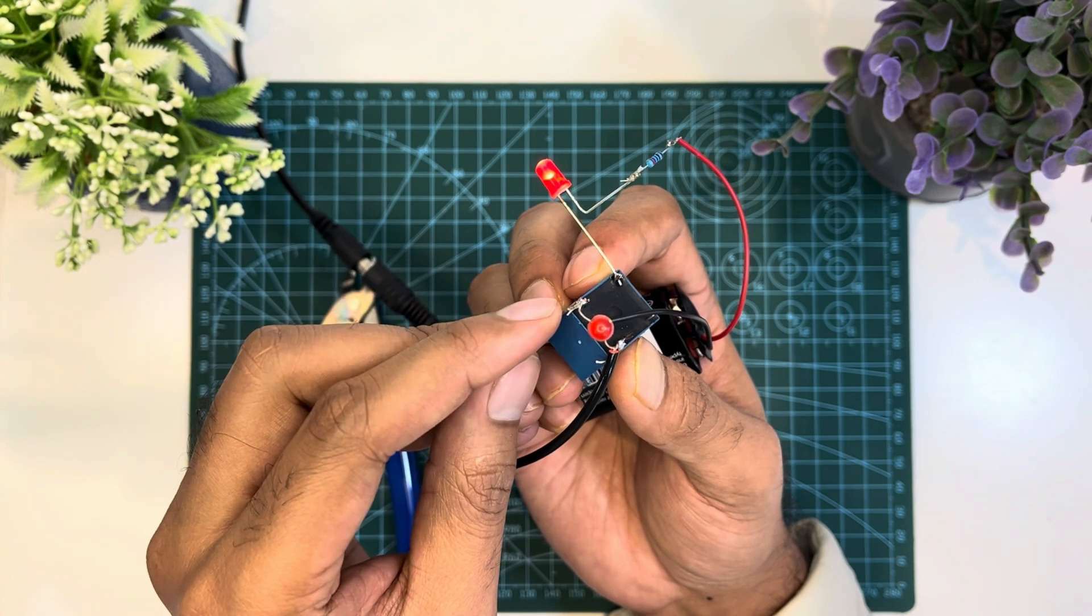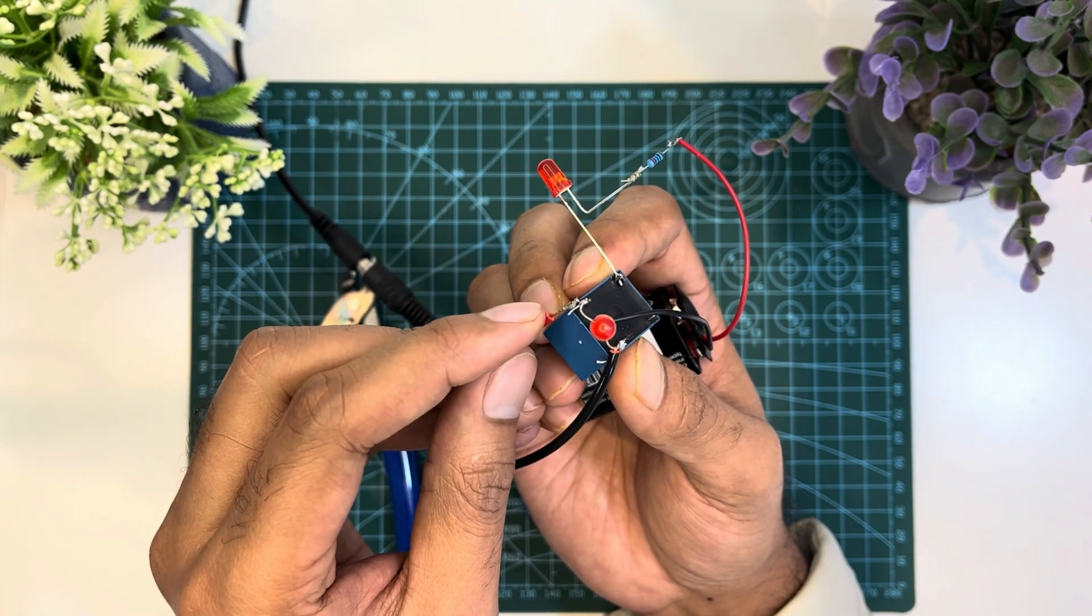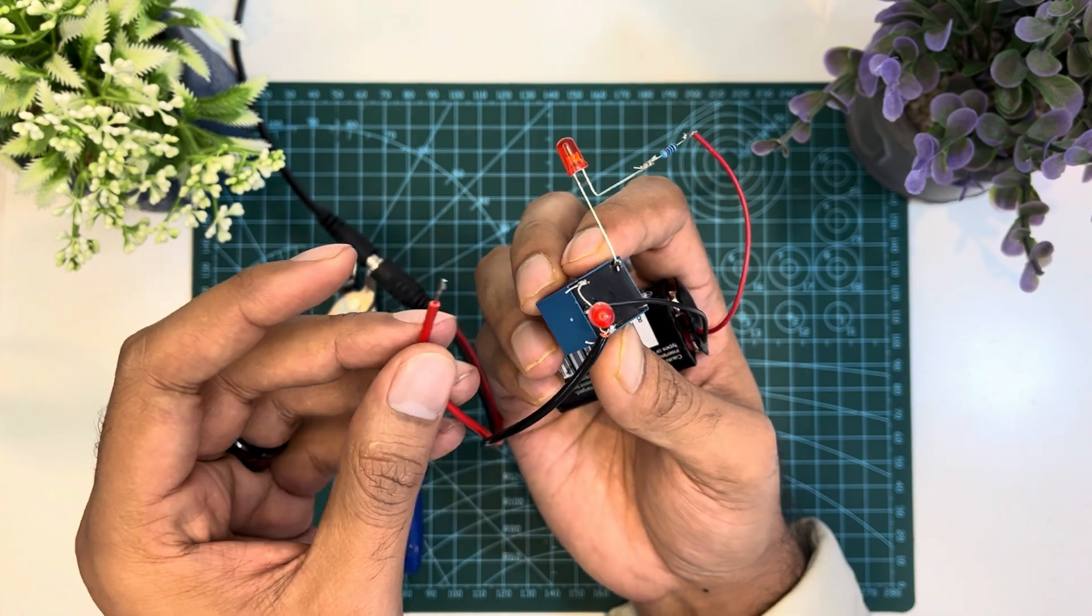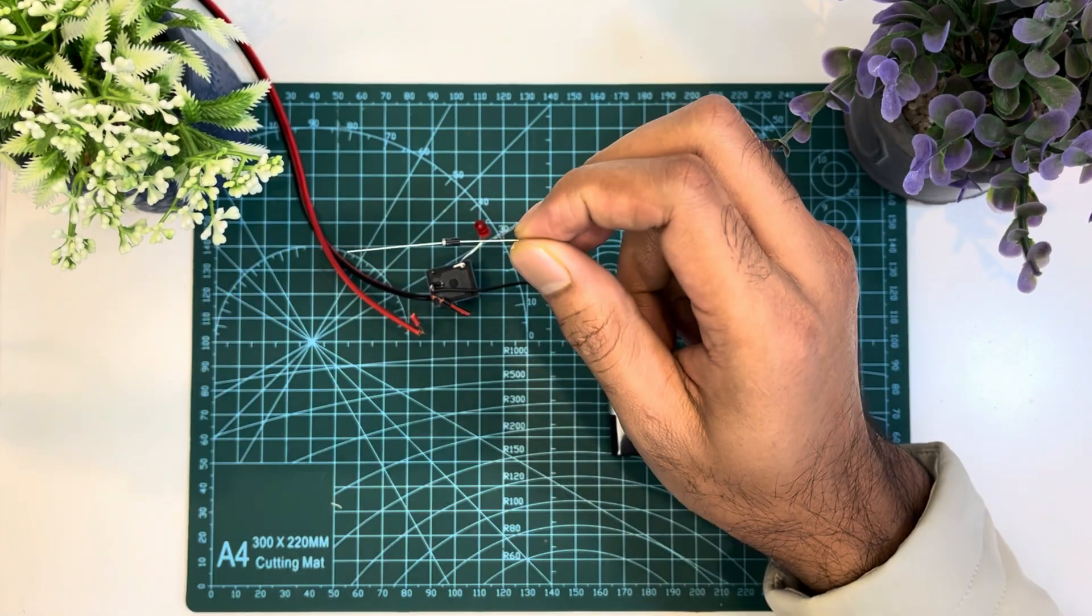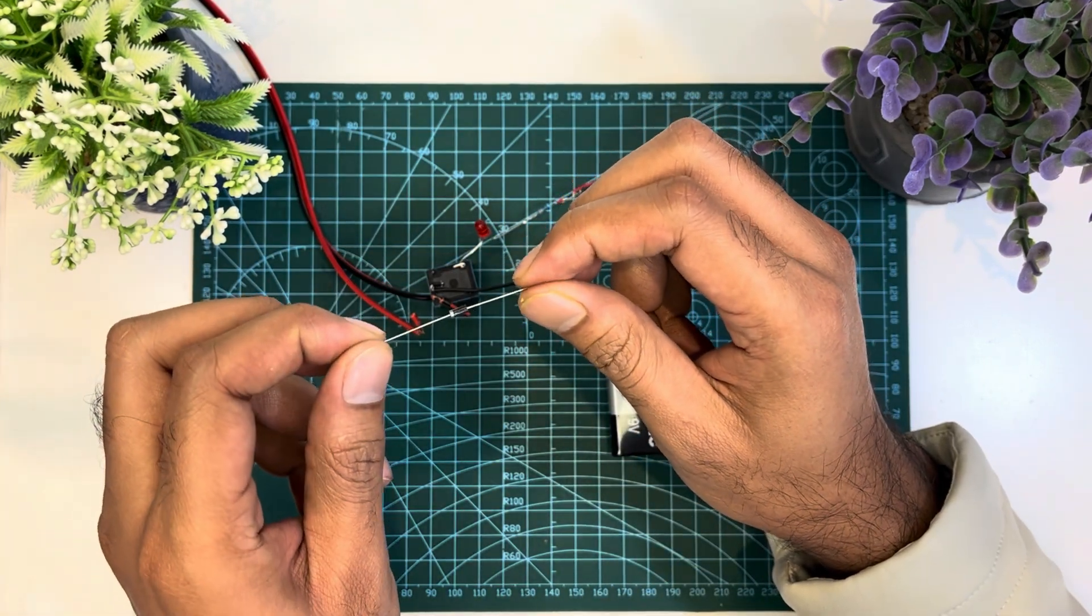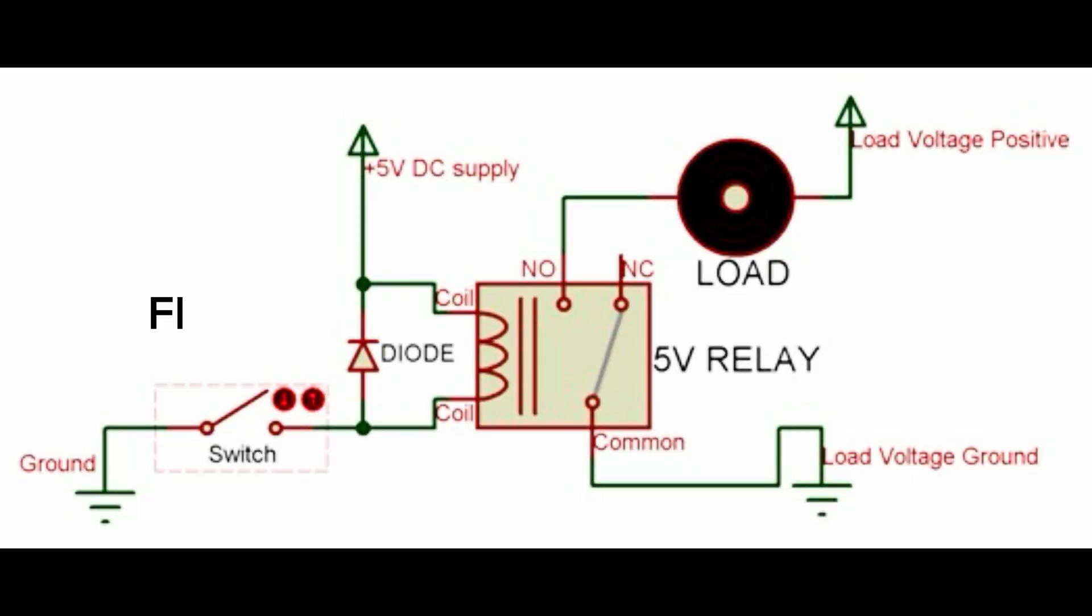The problem is this voltage can be more than 50, even more than 100V, which can damage the DC circuit, sensor, or transistor. That's why we use a diode across the coil of the relay. This diode is called the flyback diode. This diode creates a closed loop across the coil and protects the switch from high voltage peaks that can be produced by the relay coil.